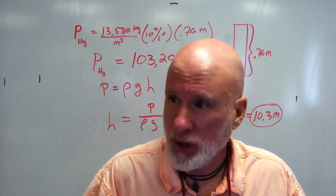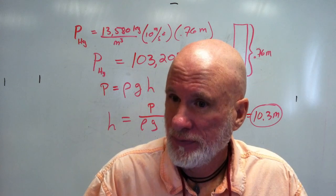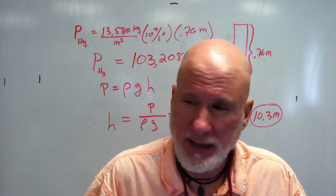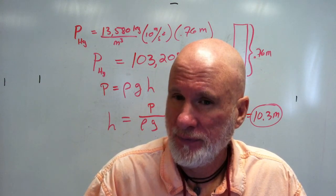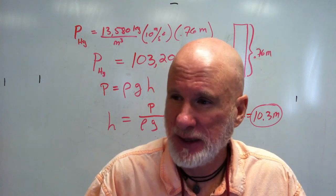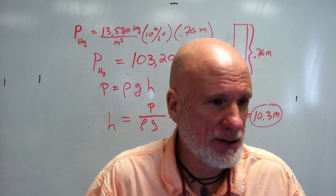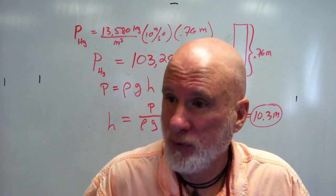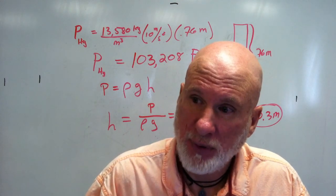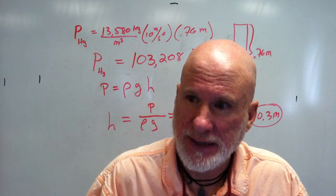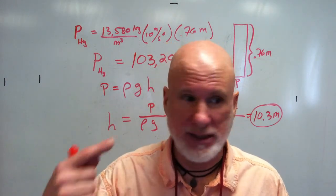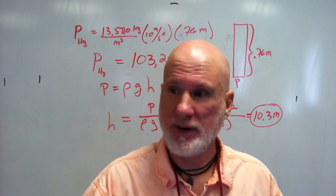That type of instrument that measures the pressure of the atmosphere is called a barometer. If the barometer is made of mercury, the height would be around 0.76 meters or 760 millimeters. If the barometer were made of water, it would be 10.3 meters — very significant, and that will be very important in our discussions.